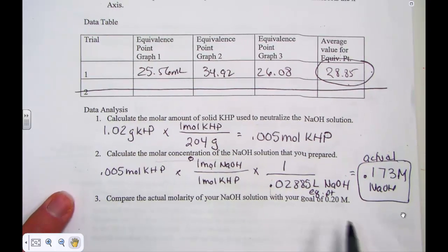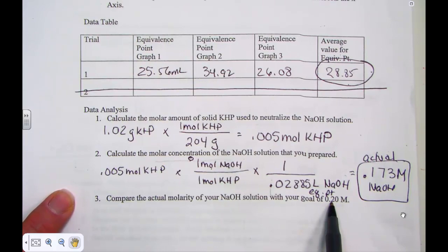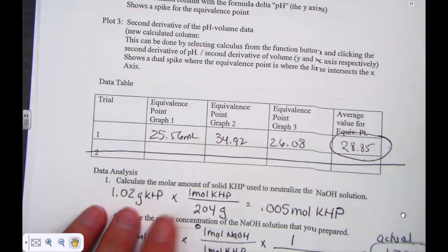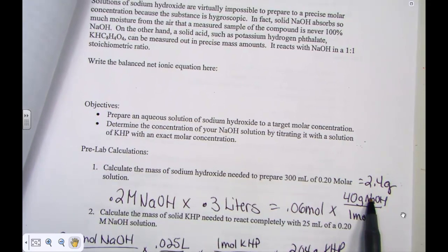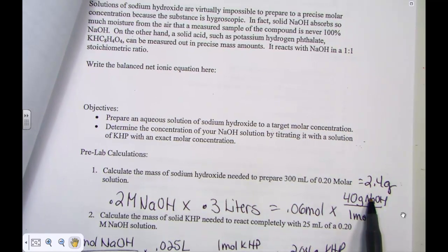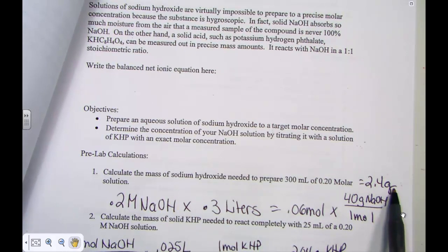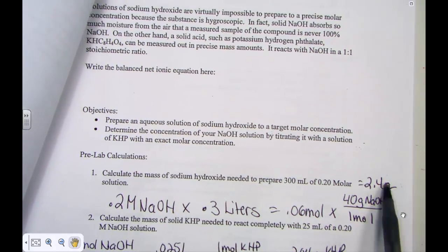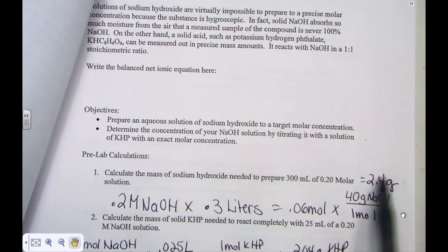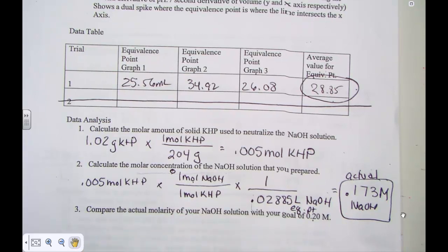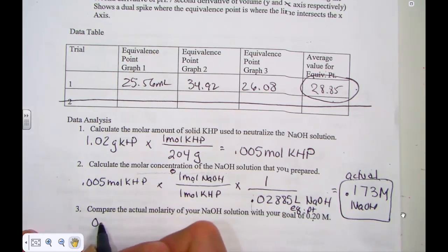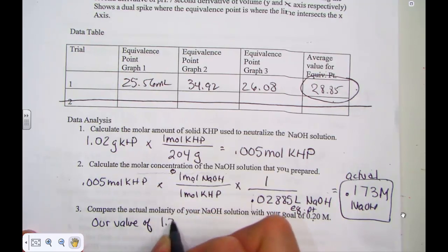Now remember, we were aiming for a 0.2 molar. When we weighed out our sample of sodium hydroxide, remember this, it's not our fault. We weighed out 2.4 grams of NaOH, but because sodium hydroxide absorbs water, it's hygroscopic, it absorbs water from the air. Not all of this 2.4 grams of NaOH is truly NaOH. There's plenty of water adding to this weight. So the molarity, it makes sense that it's under the target. So our value of 0.173 molar is under.